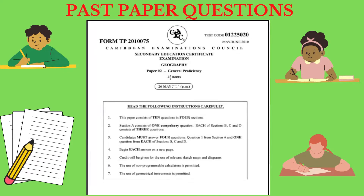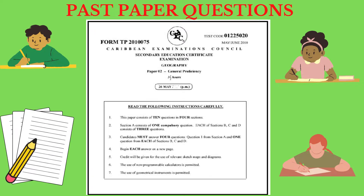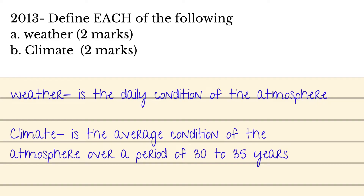Let us now look at a few past paper questions on the topic. The first question says: define each of the following — weather and climate — for two marks each. For weather, remember that weather is the daily or day-to-day condition of the atmosphere. Climate, on the other hand, is the average condition of the atmosphere over a period of 30 to 35 years.